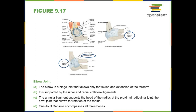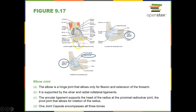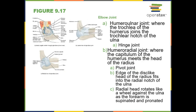We have the radial collateral ligament, also known as the lateral collateral ligament. We have the ulnar collateral ligament, also known as the medial collateral ligament of the arm. And then we have an annular ligament that wraps around the radial head, attaching the radial head to the ulna. This allows movement of that head when we go from supination to pronation — the radial head just turns, allowing us to pronate our hand.